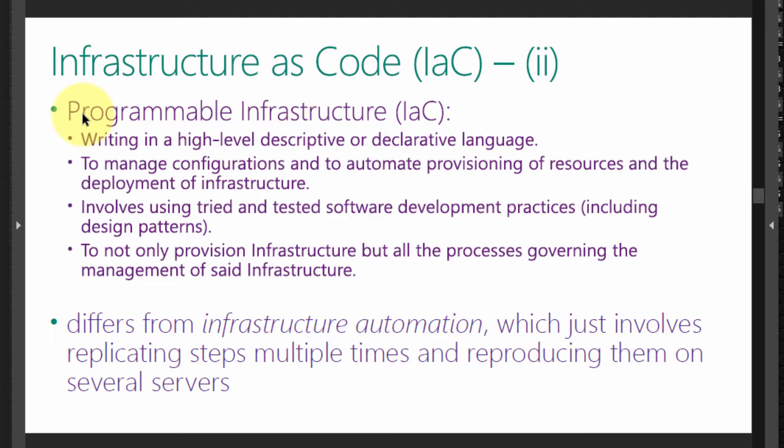That's a key distinction that differentiates infrastructure as code from infrastructure automation. Infrastructure automation just involves replicating steps multiple times and reproducing them on different servers. Whereas infrastructure as code goes far beyond that — it allows us to provision not only the infrastructure, but all the processes governing the management of said infrastructure.